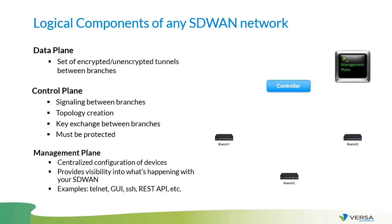Another example: you log into the management plane GUI and want to see statistics from the controller and make a change on branch three. You enter this information into the management plane interface, and it automatically propagates the configuration or pulls information from the components in your network. Using this centralized management plane, we don't have to log into every device separately to make configuration changes, as was the case in legacy networks before software-defined networking.